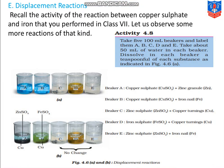Now let's see what displacement reactions are. Recall the activity of the reaction between copper sulfate and iron that you performed in your class 7. In class 7, you did an activity where copper sulfate aqueous solution had an iron nail dissolved in it, and it caused a change in the color of the solution. You observed the color change, but why did this happen?